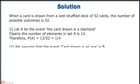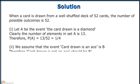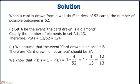2. We assume that the event 'card drawn is an ace' is B. Therefore, 'card drawn is not an ace' should be B'. We know that probability of B' is equal to 1 minus probability of B, which is equal to 1 minus 4 by 52, which is equal to 1 minus 1 by 13, that is 12 by 13.